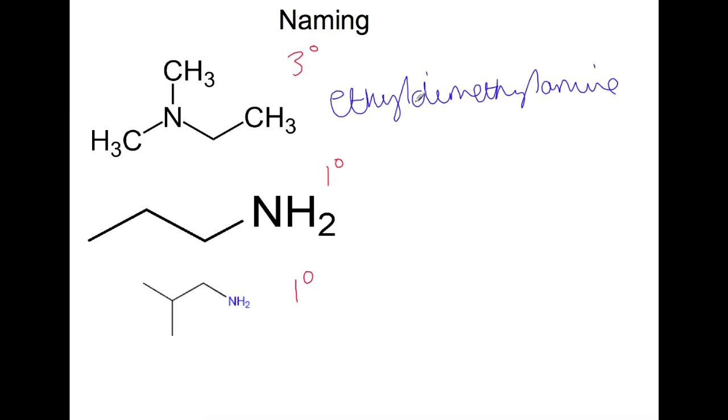This one here we have a chain of three. It's been drawn in skeletal formula, so you've got one, two, three carbons, so this one will be propyl amine.